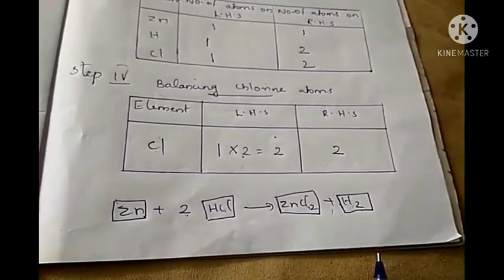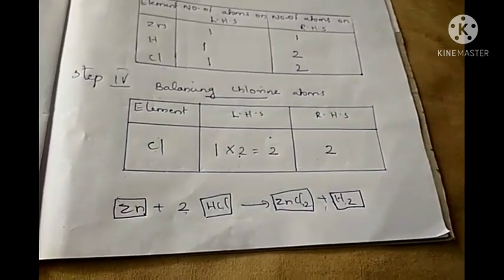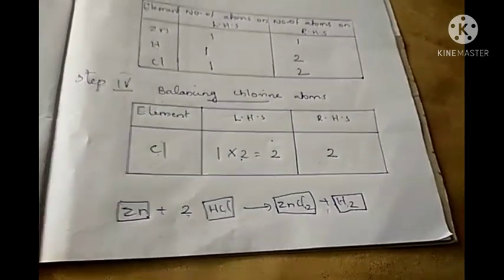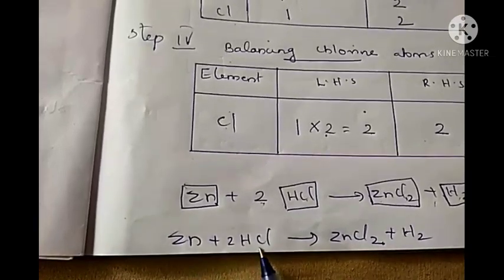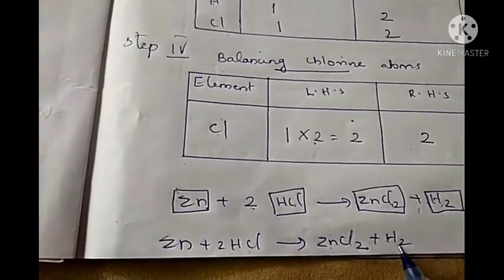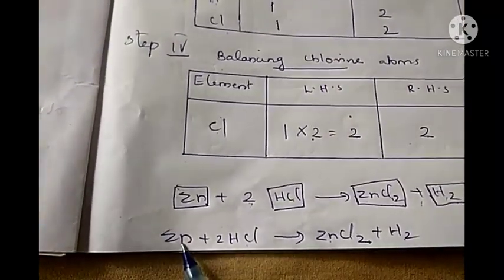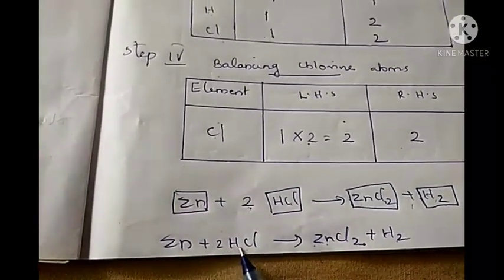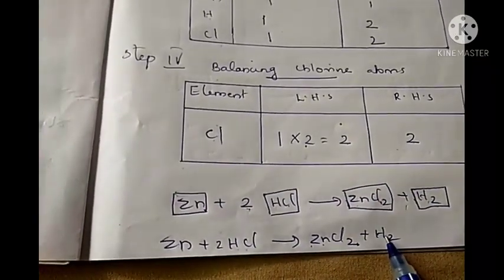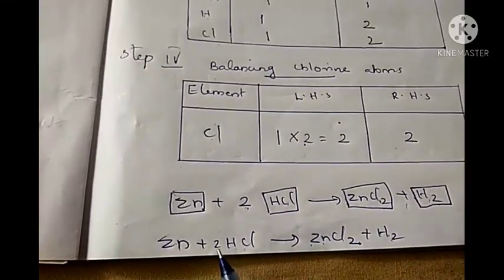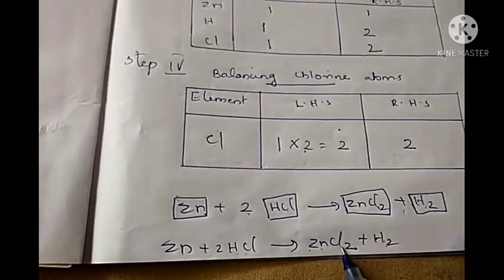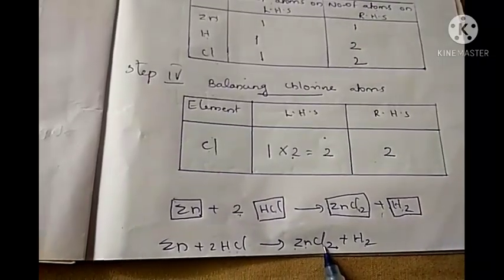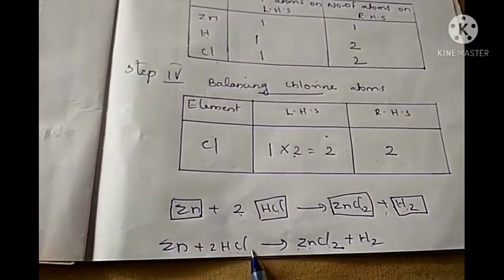This equation is balanced. We rewrite it without the boxes: Zn + 2HCl → ZnCl2 + H2. Left hand side: 1 zinc, 2 hydrogen, 2 chlorine. Right hand side: 1 zinc, 2 hydrogen, 2 chlorine. The numbers of all atoms are equal, so this is the balanced equation.